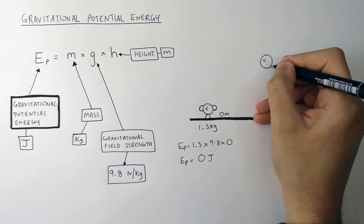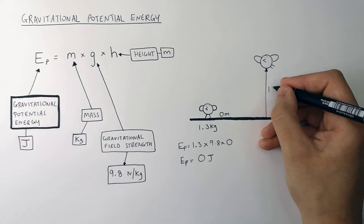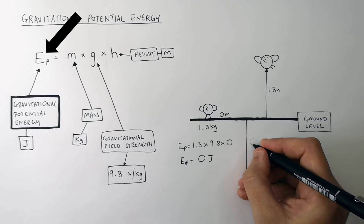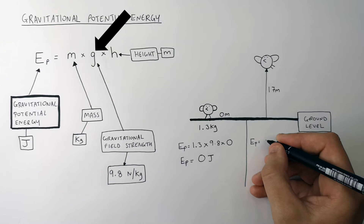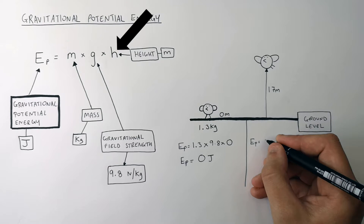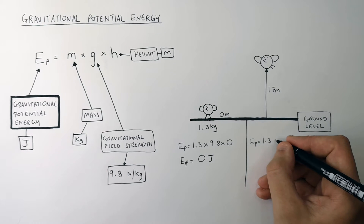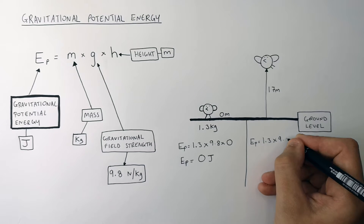The bird goes for a fly, and we can now work out its new gravitational potential energy stored in the bird using the equation from before. The gravitational potential energy equals the bird's mass times the gravitational field strength times the height above the ground. The mass doesn't change — it's still 1.3kg. The gravitational field strength acting on the bird hasn't changed either, so it's still 9.8N per kilogram.